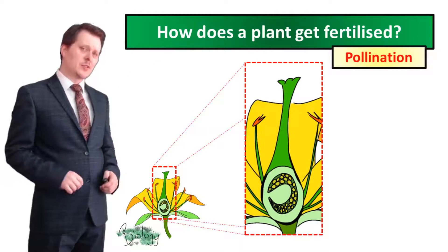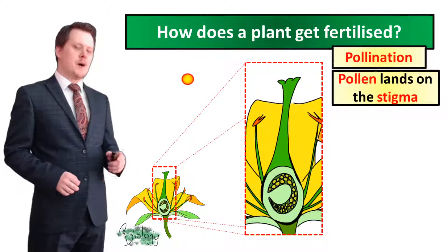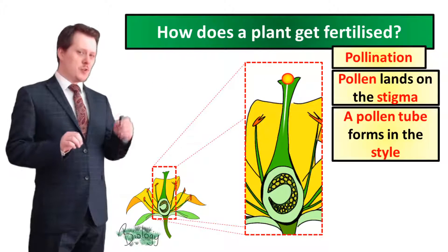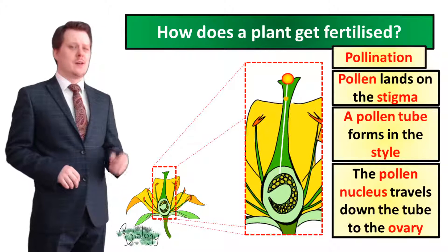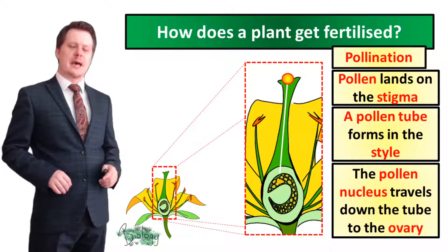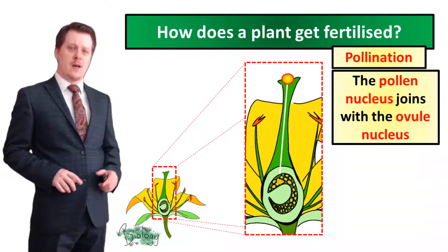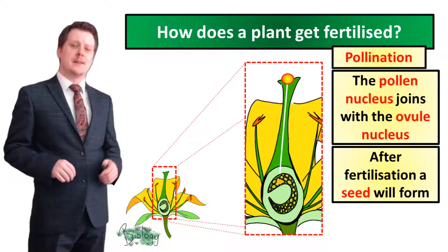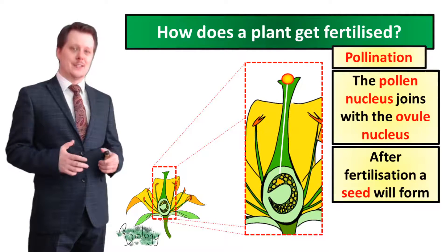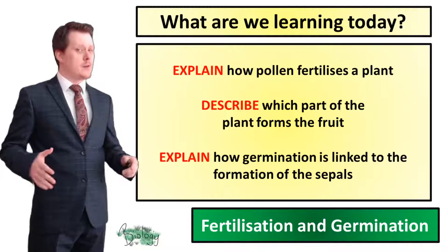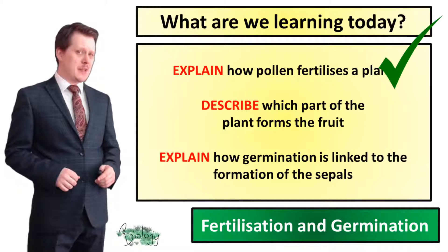The statements should go in the following order: pollen lands on the stigma; a pollen tube forms down the style; the pollen nucleus travels down the tube to the ovary; the pollen nucleus joins with the ovule nucleus; and after fertilization a seed will form. So now we can explain how pollen fertilizes a plant.